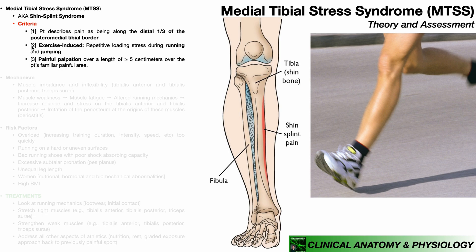Criterion two: the pain needs to be exercise-induced. It doesn't matter if the person is a runner, a jumper, or anything in between — that specific activity, particularly doing it more and more, needs to bring on that posteromedial tibial pain. Criterion three: painful palpation, and that palpation needs to cover at least five consecutive centimeters over the patient's familiar painful area. The more of these criteria satisfied, the more likely the diagnosis of medial tibial stress syndrome.